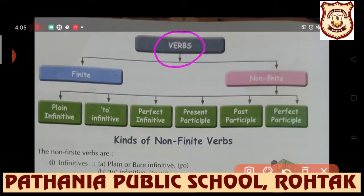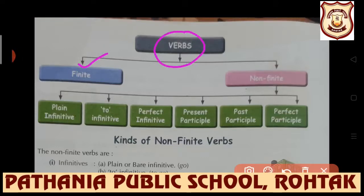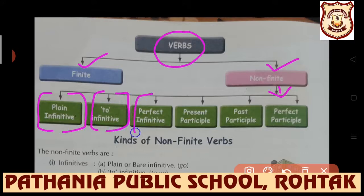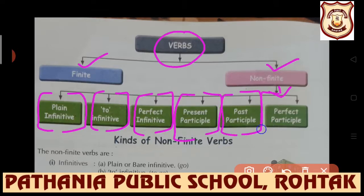Non-finite verbs have six different parts: first is plain infinitive, second is to-infinitive, third is perfect infinitive, fourth is present participle, fifth is past participle, and sixth is perfect participle. Let's learn about them - the kinds of non-finite verbs. Always remember the formation of different types of infinitives.